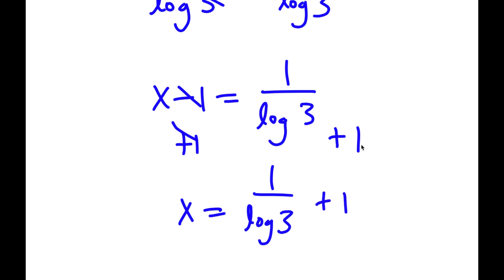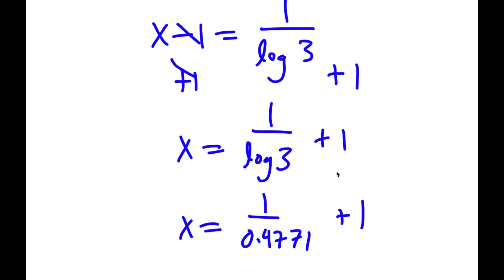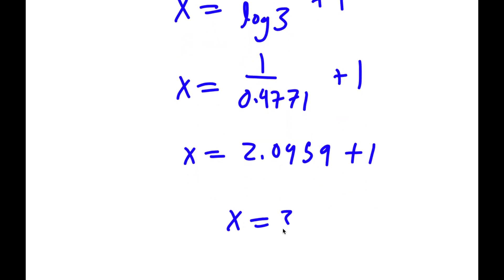So now to find the exact value — log 3, I can plug this into a calculator — log 3 is equal to 0.4771. So I have 1 over 0.4771 plus 1. Now 1 over 0.4771 is 2.0959. So I have this plus 1, so my final answer is x equals 3.0959.